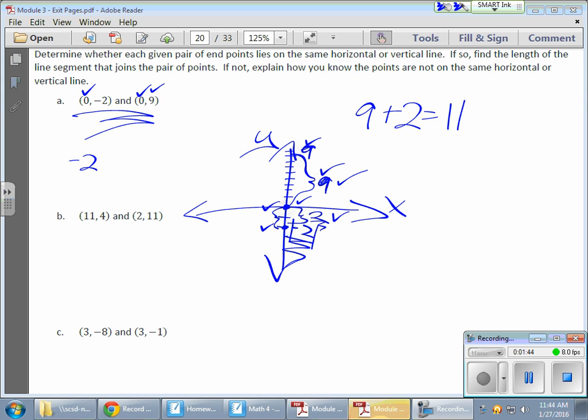So absolute value kind of comes into play here. So if I have a negative 2y value, and I have a 9y value, and they fall on the same axis on opposite sides of 0, I want the distance from 0 for one of those values and the distance from 0 for the other.